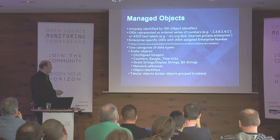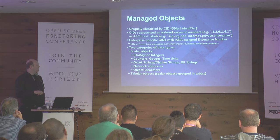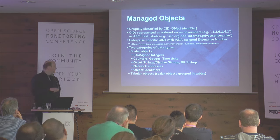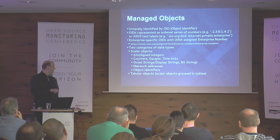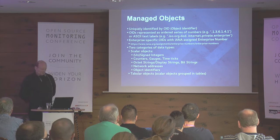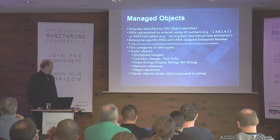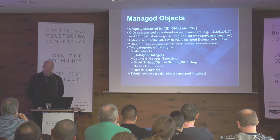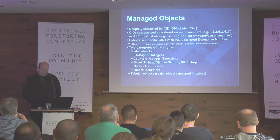There's a special variant of integers: counters, gauges, time ticks. We have strings — octet strings, display strings, and bit strings. Also network addresses and object identifiers. We'll see examples for these later on. The other main category is tabular objects, or tables, which are basically scalar objects grouped into tables.